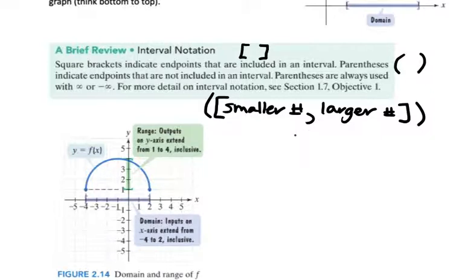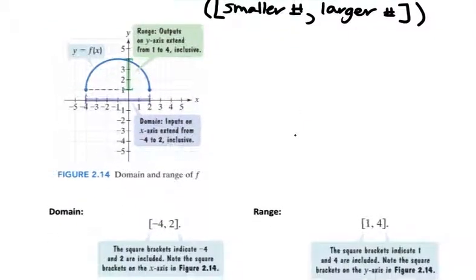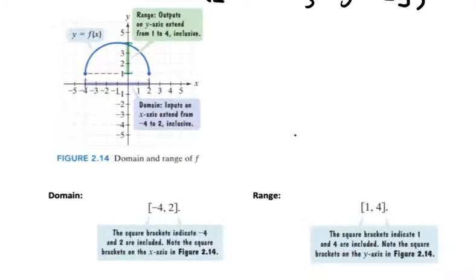We have this example from the book — this is a half circle. Looking at this graph, the domain: the x-coordinates go from negative 4 up to 2. The smallest value is negative 4, the largest value is 2. Both endpoints are included because the graph has solid circles, which means those points are included. So we write: square bracket, negative 4, comma, 2, square bracket.